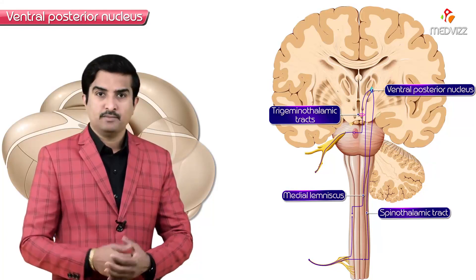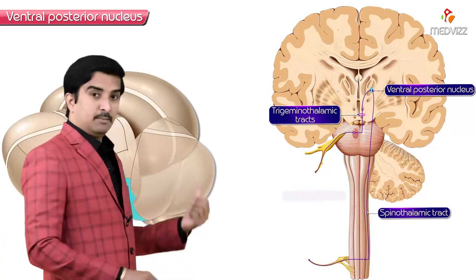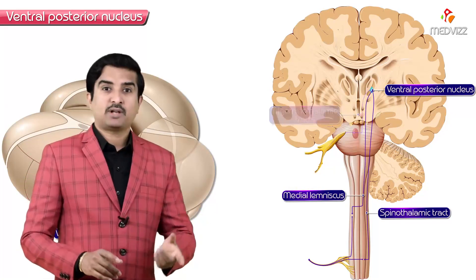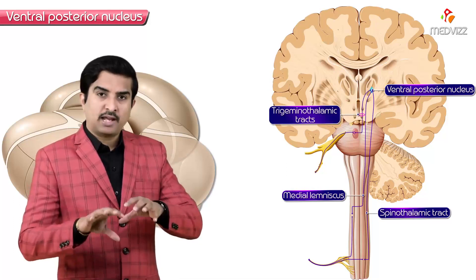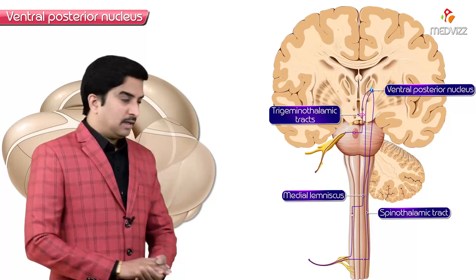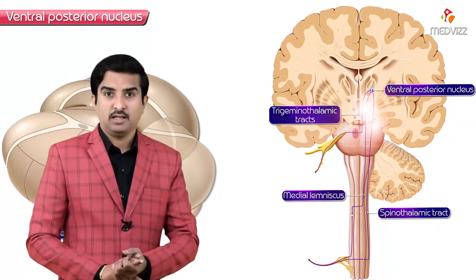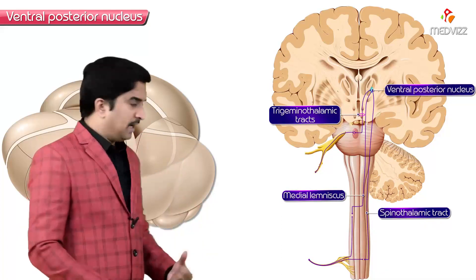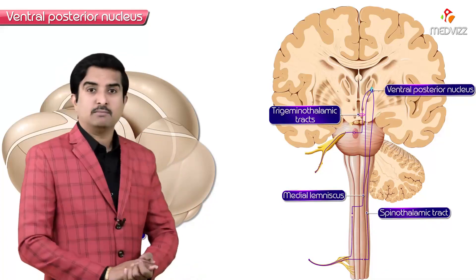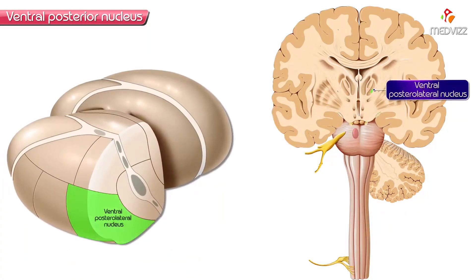The pathways carried by this nucleus from the spinal cord as well as from the brainstem are the spinothalamic tracts, the medial lemniscal bundle, and the trigeminothalamic tracts. All these tracts are carried by the ventral posterior nucleus, and the termination of these fibers is highly organized somatotopically.